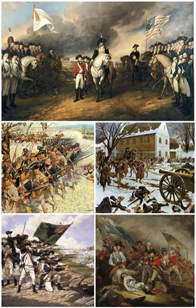Soon after France declared war, French and British fleets fought an indecisive action off Ushant on 27 July 1778. Spain entered the war on 12 April 1779, with a primary goal of capturing Gibraltar. Spanish troops under the Duc de Crillon laid siege to the Rock on 24 June. The naval blockade, however, was relatively weak, and the British were able to resupply the garrison.